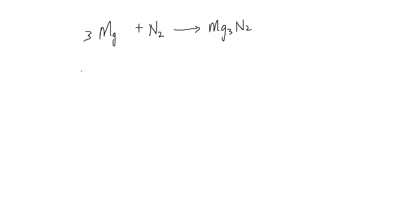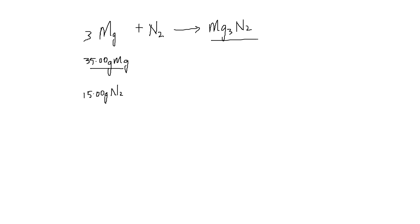So Part A is asking how many grams of magnesium nitride can be made in the reaction of 35.00 grams of magnesium and 15.00 grams of nitrogen. What I would do to solve this problem is, based on the given mass of magnesium, try to find the moles of the product. And then do a similar calculation based on the given mass of nitrogen.